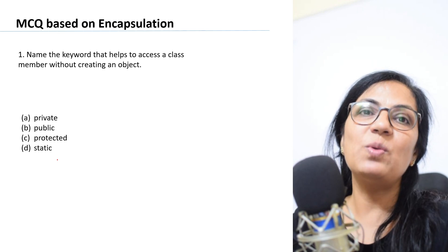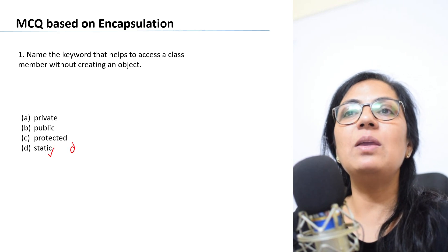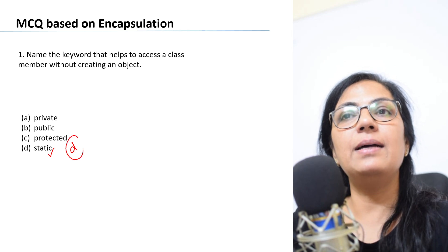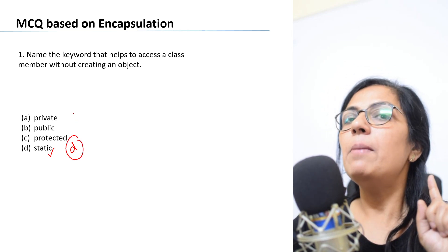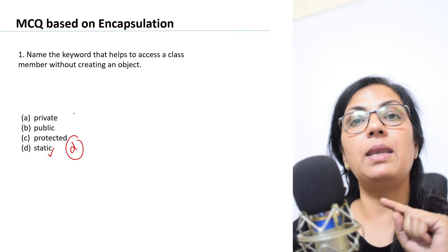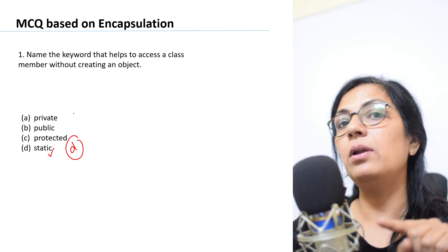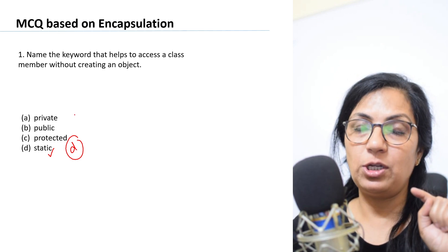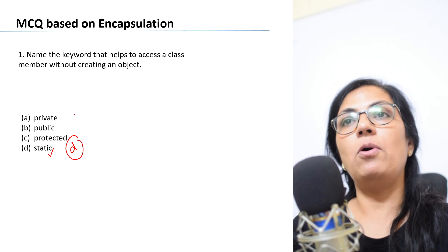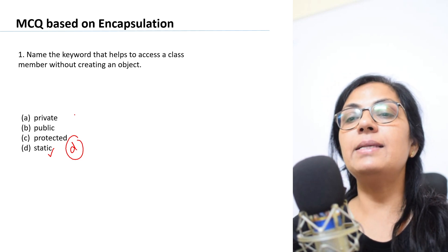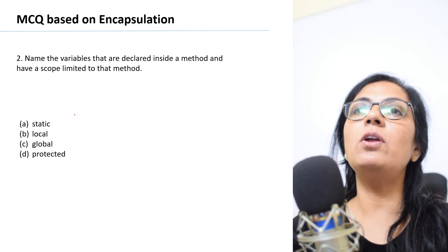The correct answer is the static keyword. If you remember, you write 'public static void main' and we never create an object for using the main function. So static is the keyword which is used for accessing a class member without creating the object.